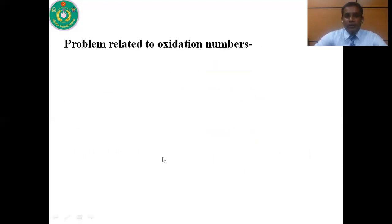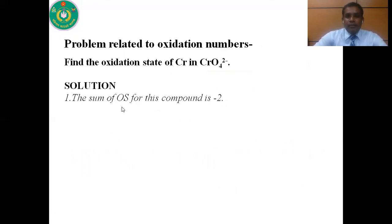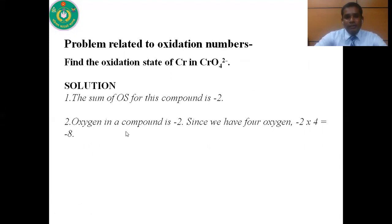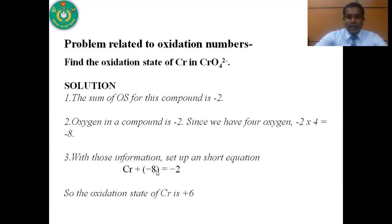Problem one: find the oxidation number of chromium in CrO₄²⁻. This is a charged particle, so the sum of oxidation numbers equals -2. Oxygen in a compound is -2 and we have four oxygens, so the total for oxygen is -8. We write: Cr + (-8) = -2. Therefore, the oxidation number of chromium is +6.